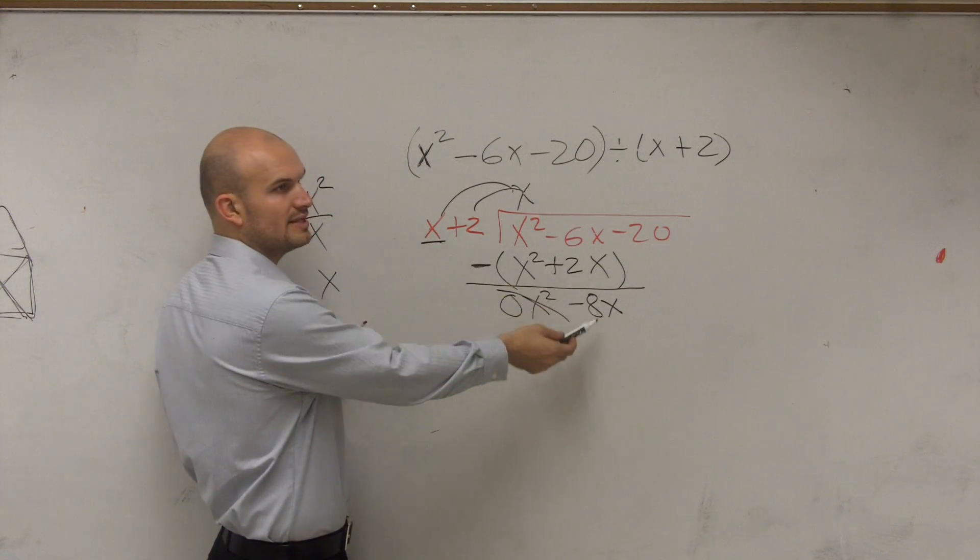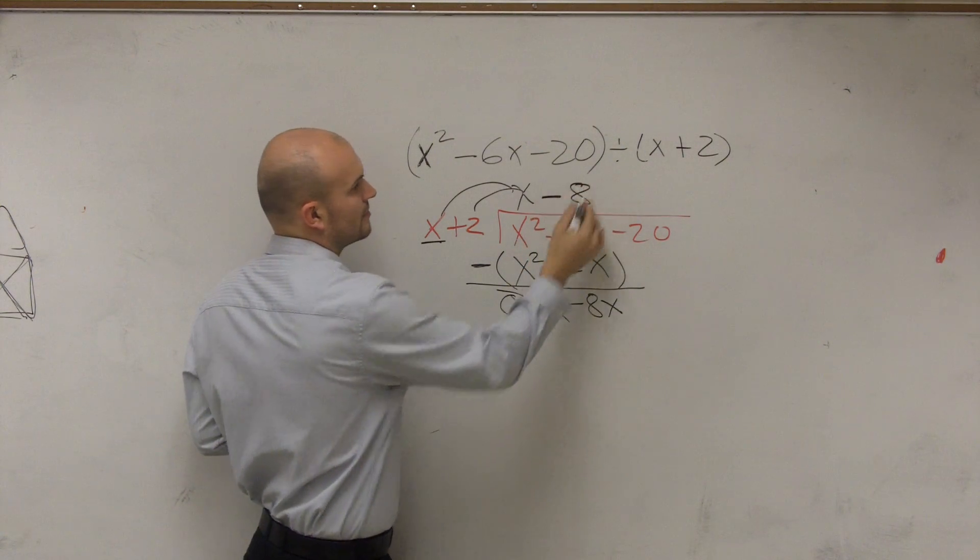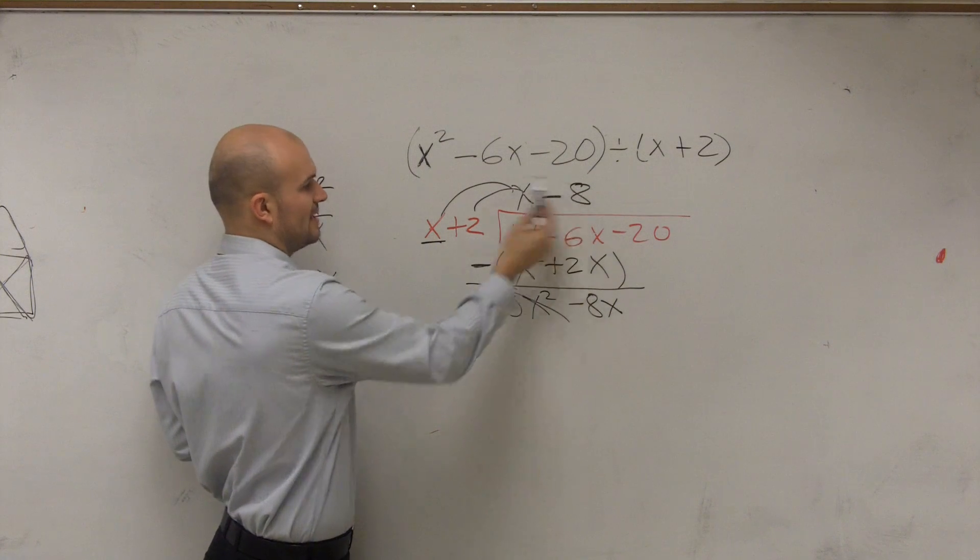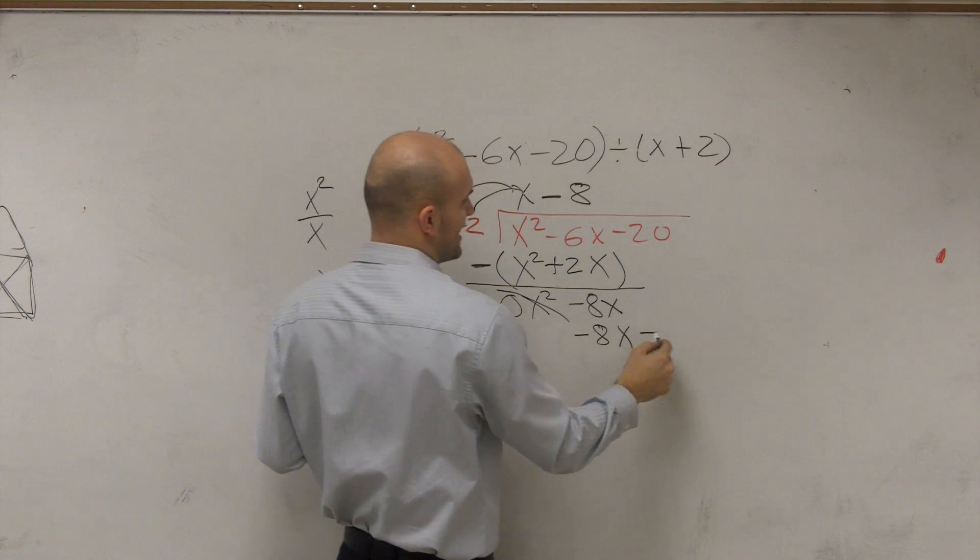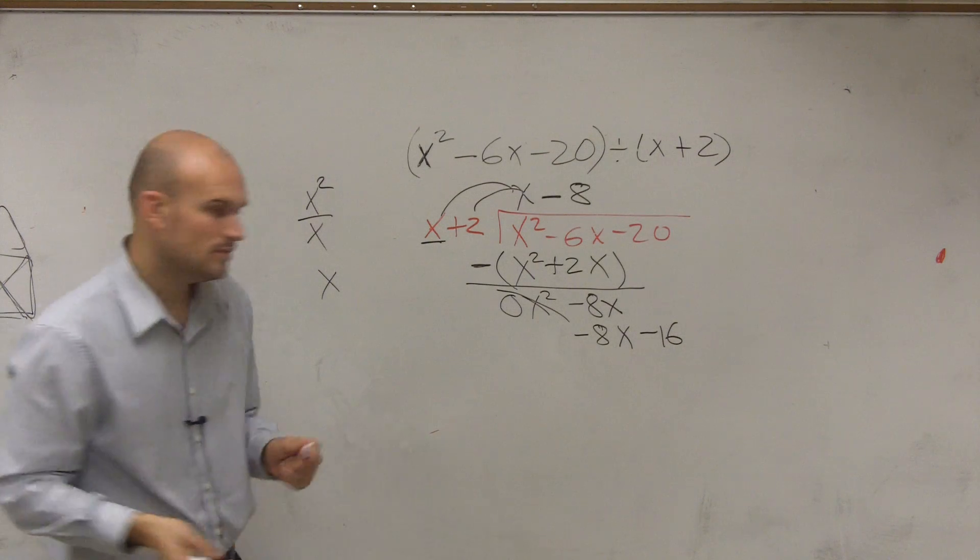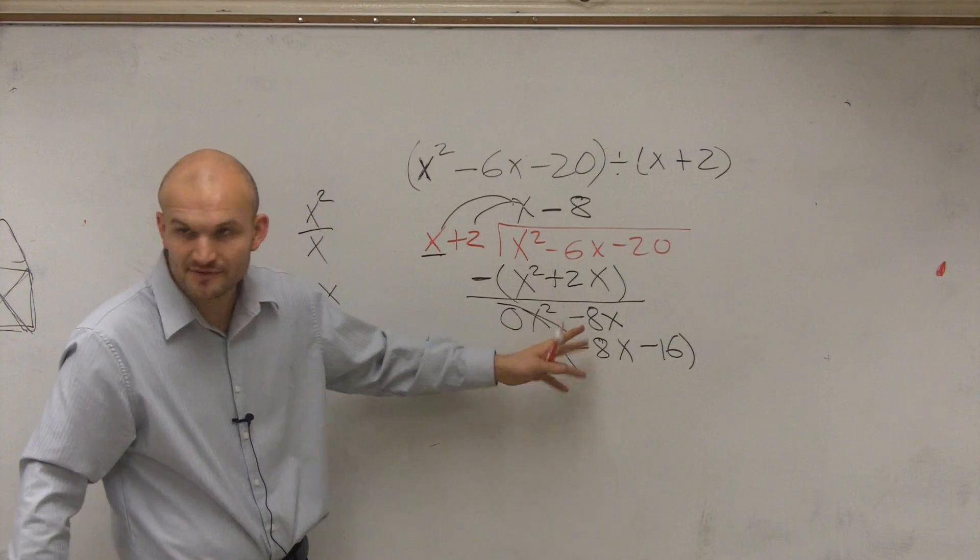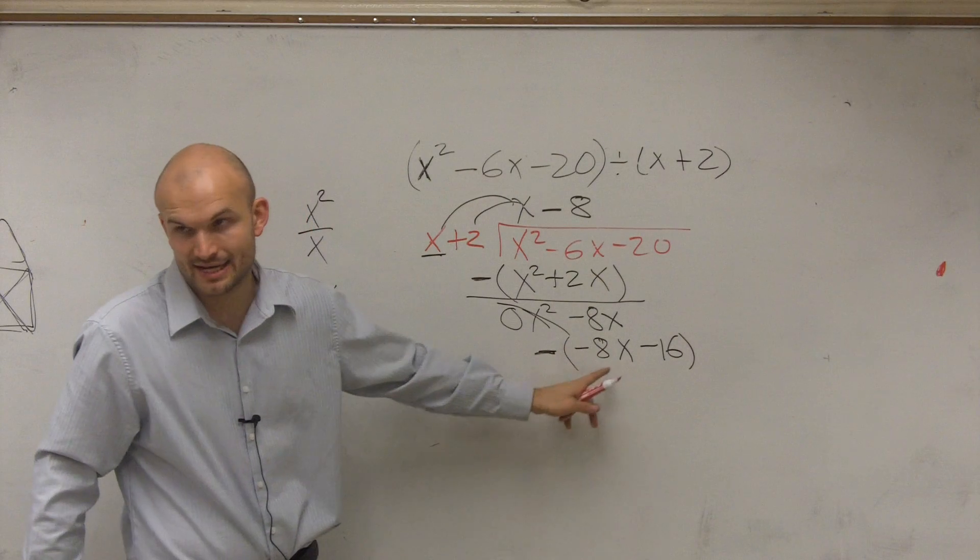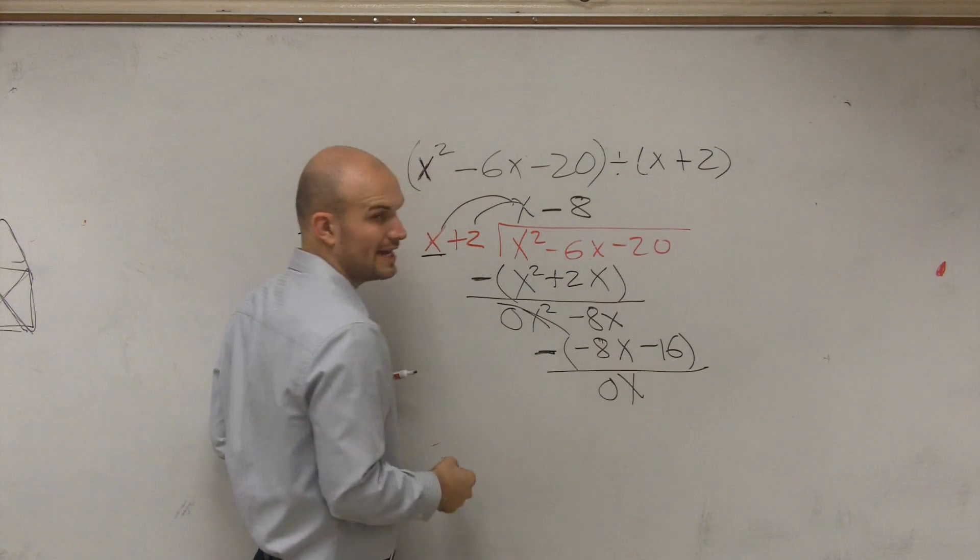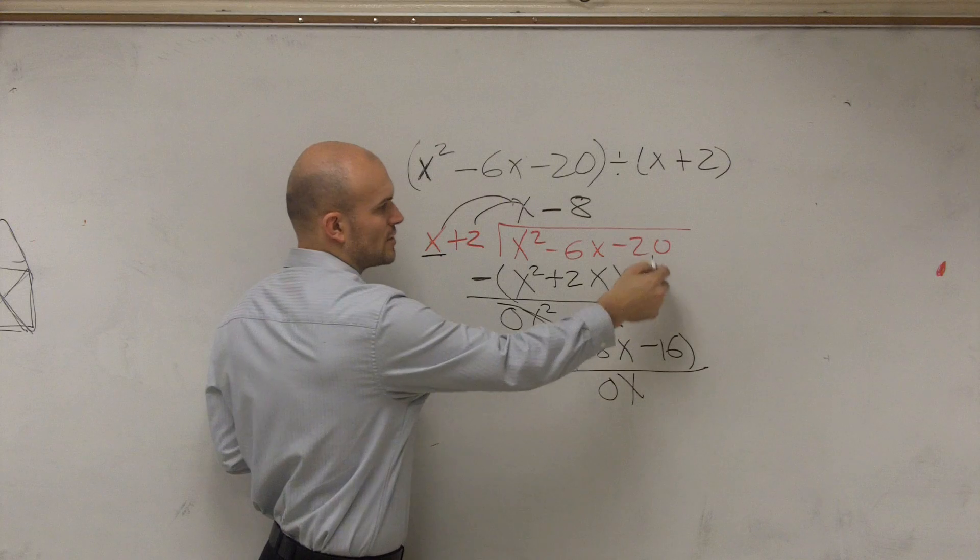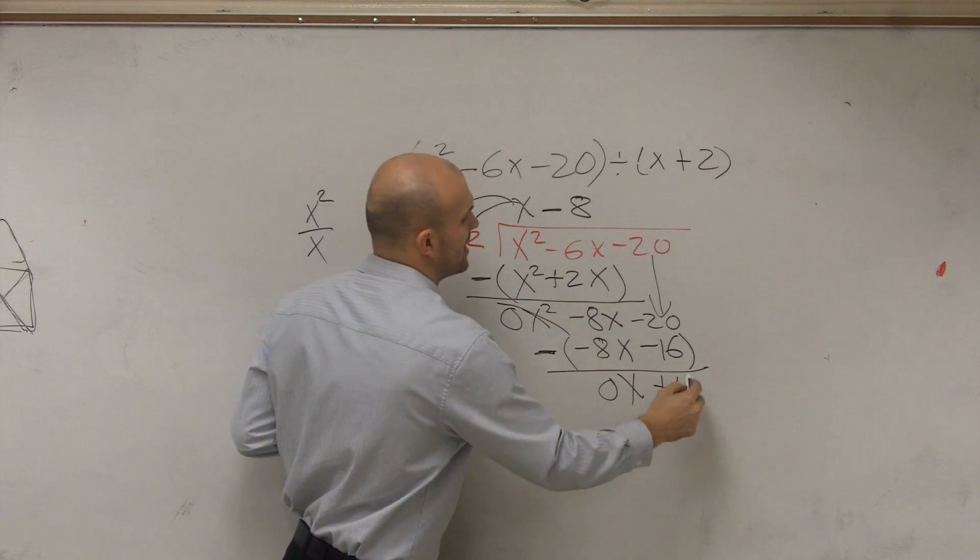Let's continue on. Now we move to the next row. x divides into negative 8x negative 8 times. Negative 8 times x is a negative 8x. Negative 8 times 2 is a negative 16. Now we subtract the rows. Remember, these two terms have to be exactly the same. Negative 8x minus negative 8x, that's a double negative, so therefore it becomes positive, which is 0x, which is 0. We don't have anything to subtract this down, so we bring the negative 20 down. Negative 20 minus a negative 16 is a positive 4.